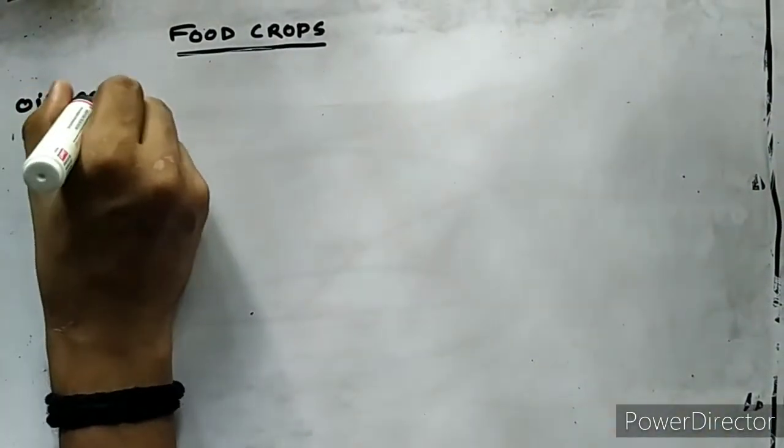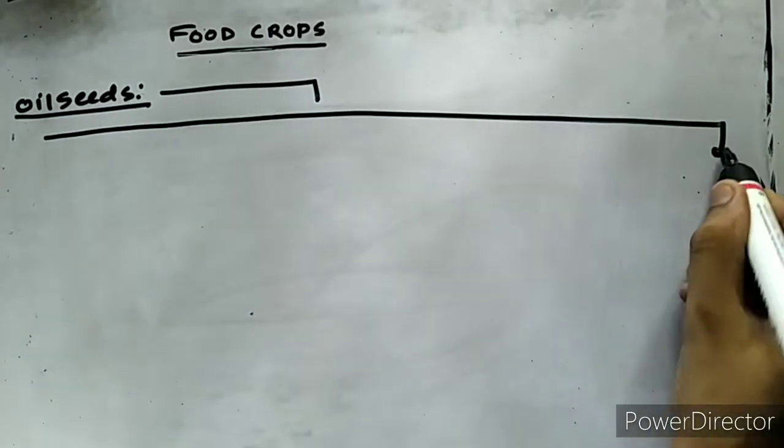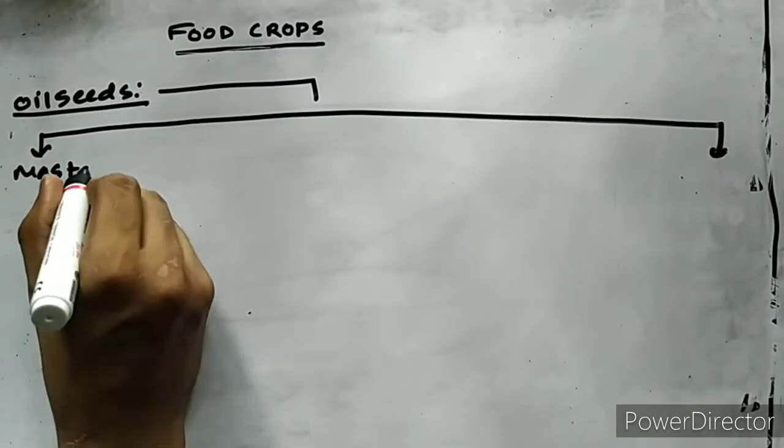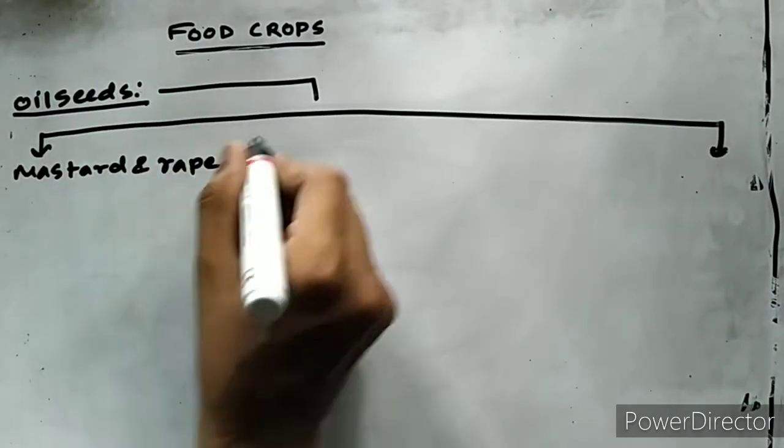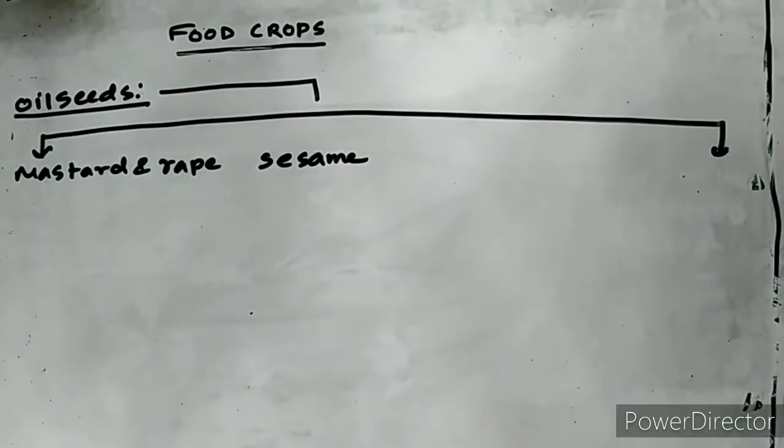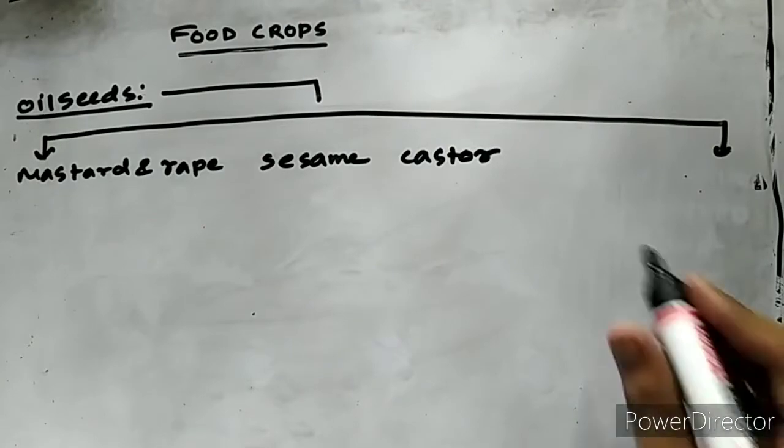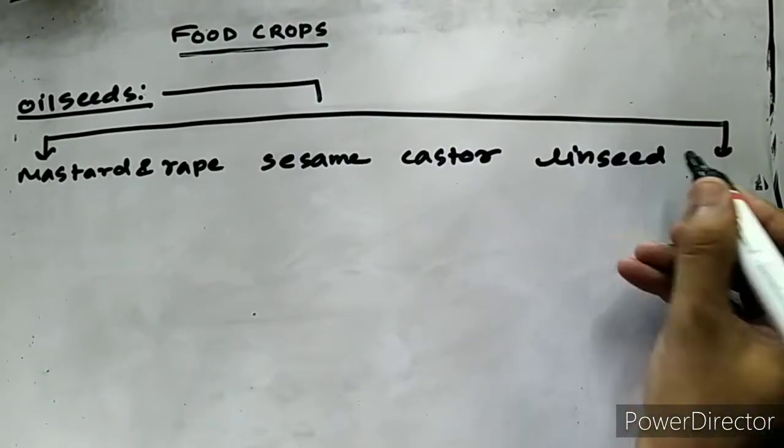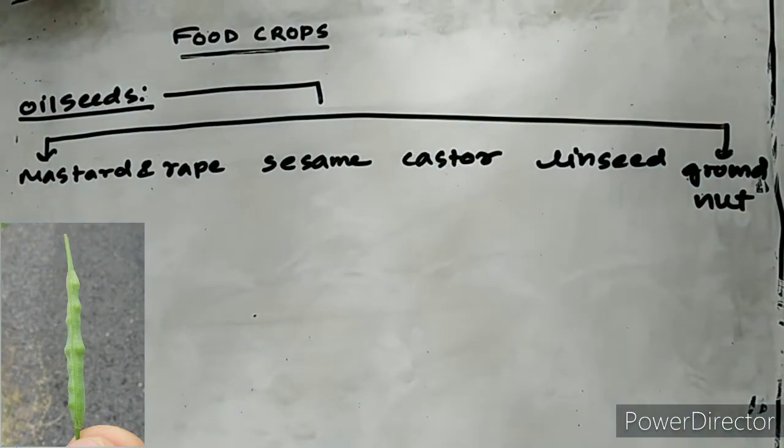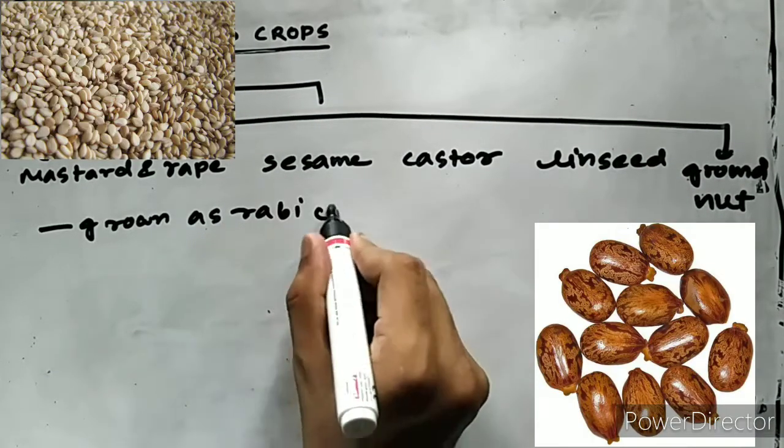The next important food crop is the oilseeds. Assam grows several varieties of oilseeds, but the state is also not sufficient in edible oil. The oilseeds grown in the state are mustard and rapeseed, sesame, castor, linseed, and groundnuts.